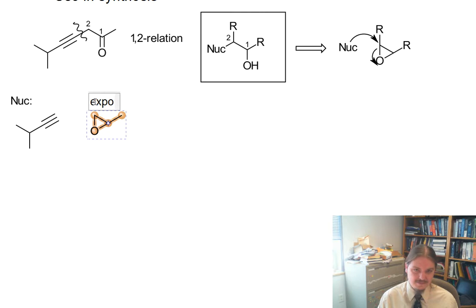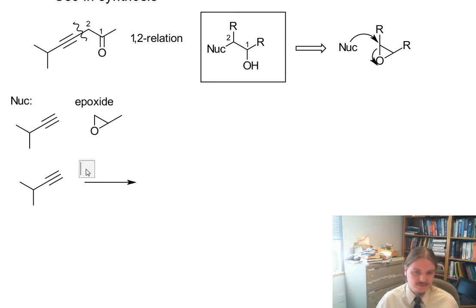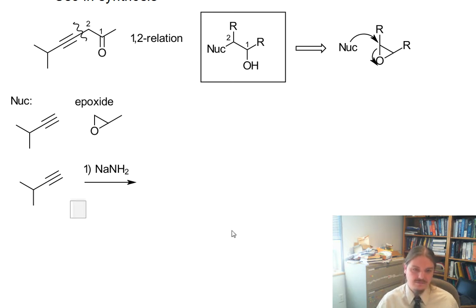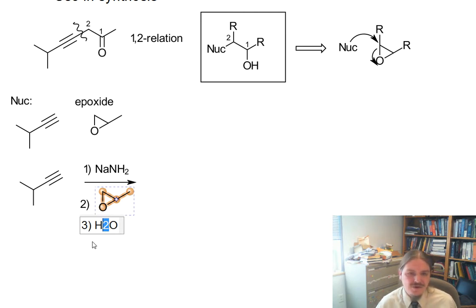Here is our epoxide. Let's start our way forward from the alkyne. First we need to deprotonate the alkyne using something like sodium amide or sodium hydride. Then we're going to add the epoxide that we want to use, and follow that up with an aqueous workup step because there's no proton source around yet. This could probably all be done in one reaction vessel.